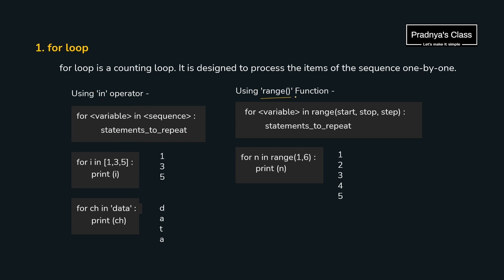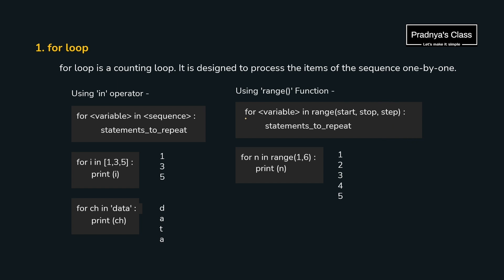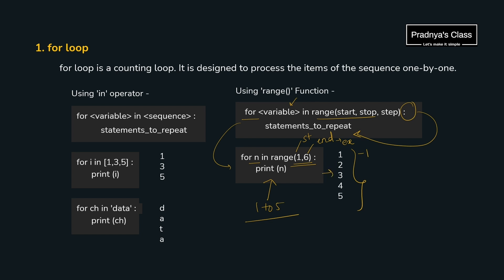Now let's check out the range function. In range, we write start, end, and step — start and step are optional; if not mentioned, start defaults to 0 and step defaults to 1. The stop parameter is mandatory but exclusive, meaning we consider one less than the mentioned limit. The syntax is: for variable in range(). For example, for i in range(1, 6) — the loop executes from 1 to 5, and the output shows numbers 1 to 5. Make sure you are clear with the for loop and range function.